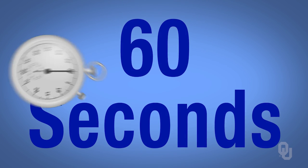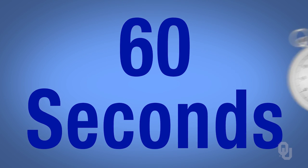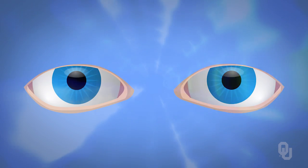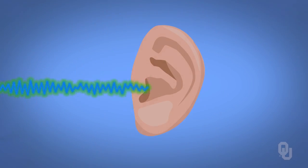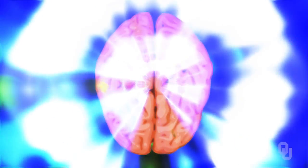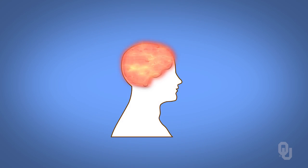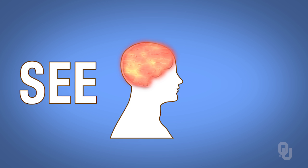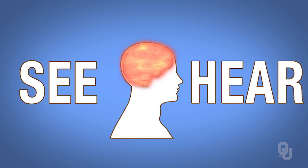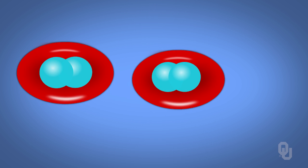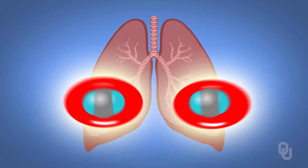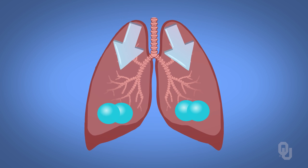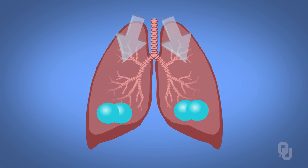In the next 60 seconds as you watch this video, your eyes will convert light waves into electrical signals that will be conveyed to the brain, while your ears will convert sound waves into electrical signals that too will be conveyed to the brain. Your brain will process these signals allowing you to see and hear this video. Meanwhile, your cells will use oxygen to make energy and produce carbon dioxide, which will then be exchanged for more oxygen as you breathe in and out 12 times.